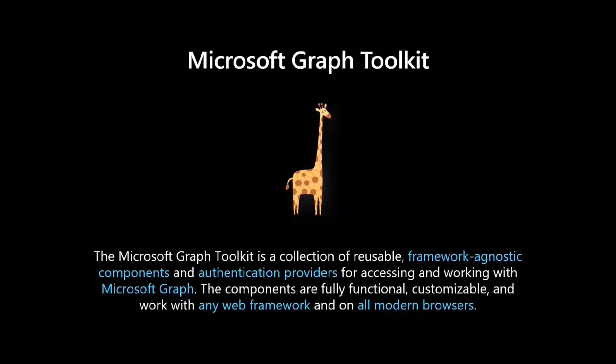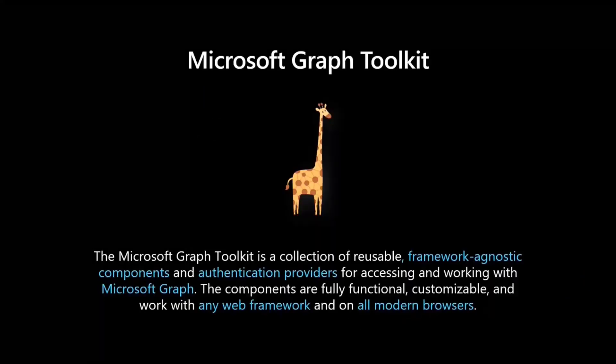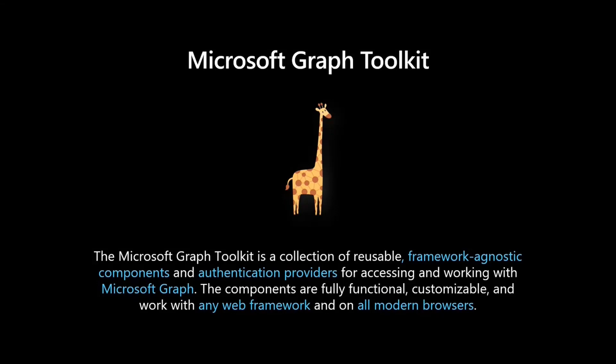So as a reminder, what is the Microsoft Graph Toolkit? The toolkit is a collection of reusable, framework-agnostic components and auth providers that let you access and work with the Microsoft Graph. It is a set of fully functional, drop-in components you can use in your apps that requires very few lines of code, where you can build customizable experiences that work with any framework. Today will be a great example of this because we're going to use it with React, and it also works on any modern browsers.